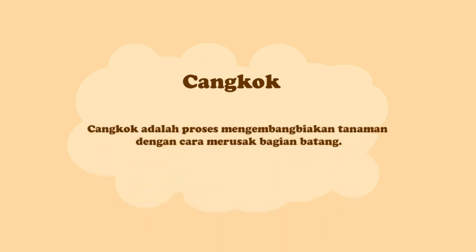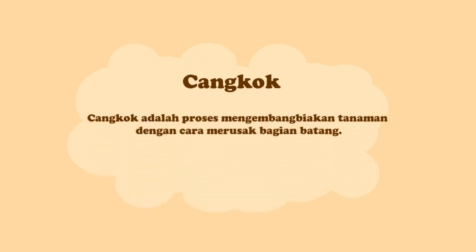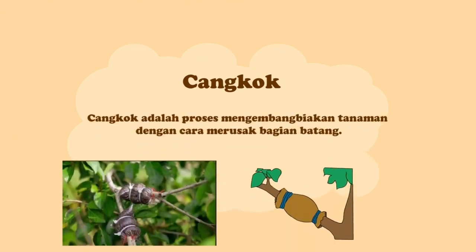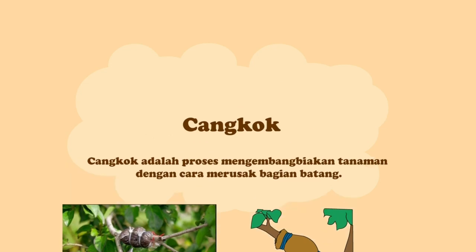Berikut adalah beberapa cara dari perkembangbiakan vegetatif buatan. Yang pertama, cangkok. Cangkok adalah proses mengembangbiakan tanaman dengan cara merusak bagian batang, sehingga batang akan memiliki akar. Karena tumbuhan tidak bisa melakukan hal ini sendirian, maka membutuhkan bantuan manusia.